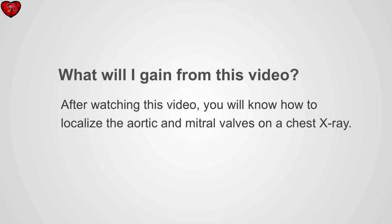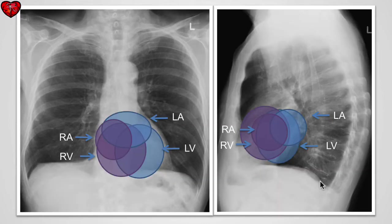What will I gain from this video? After watching this video, you will know how to localize the aortic and mitral valves on a chest x-ray. The mitral valve lies between the left atrium and the left ventricle. The aortic valve lies between the left ventricle and the aorta.